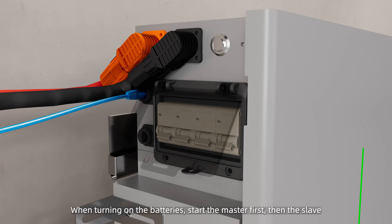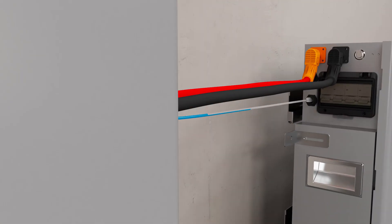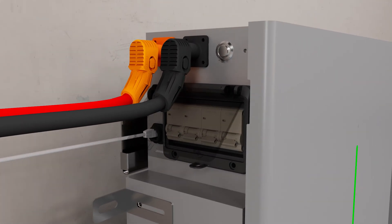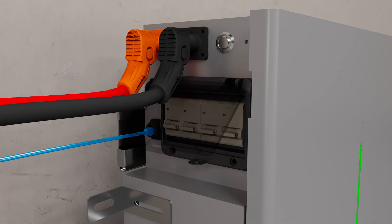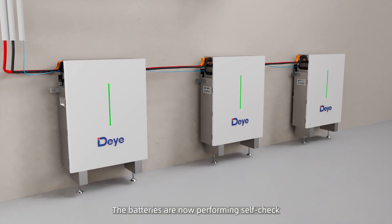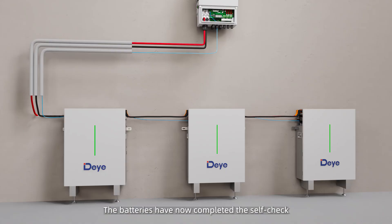When turning on the batteries, start the master first, then the slave. The batteries are now performing a self-check. The batteries have now completed the self-check.